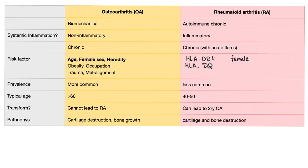Now for the comparison table — osteo versus rheumatoid. Osteo is biomechanical; rheumatoid is autoimmune. Osteo is non-inflammatory; rheumatoid is inflammatory. Both are chronic, although rheumatoid can have acute flares with neutrophils. Risk factors for osteo include age, female sex especially post-menopausal, heredity, obesity, occupation, trauma, and malalignment. For rheumatoid, you have HLA-DR4, HLA-DQ, and it's more common in females. Osteoarthritis is more prevalent than rheumatoid. Typical age for osteo is over 60; for rheumatoid, 40 to 50. Osteo cannot transform into rheumatoid, but rheumatoid can progress to secondary osteoarthritis.